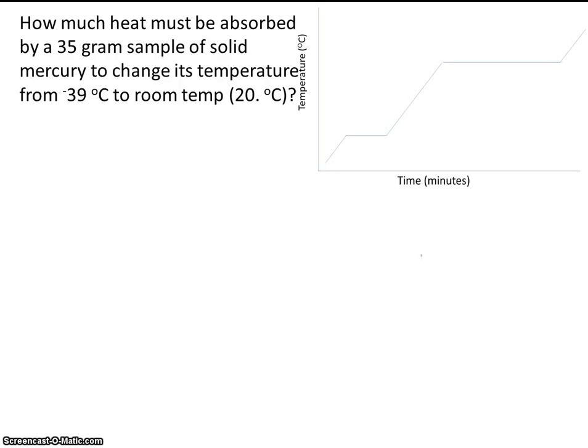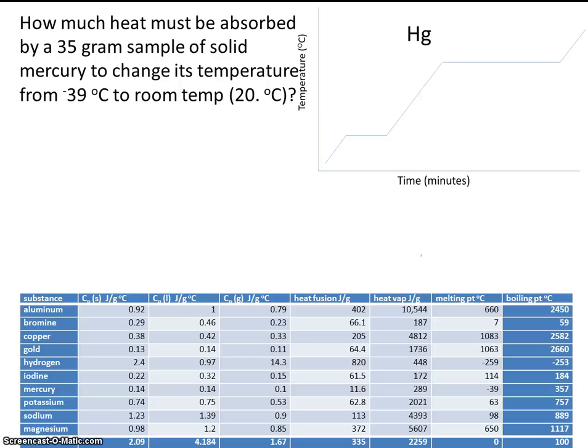So start with your heating and cooling curve, and let's locate mercury on the chart. Now, the melting point is -39. Add that to your graph. And the boiling point is 357. Add that to your graph as well.